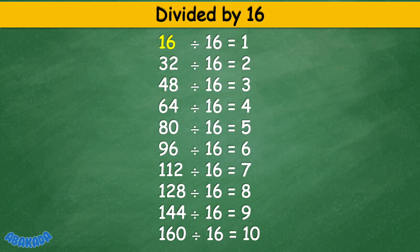Divided by 16. 16 divided by 16 equals 1. 32 divided by 16 equals 2. 48 divided by 16 equals 3. 64 divided by 16 equals 4. 80 divided by 16 equals 5. 96 divided by 16 equals 6. 112 divided by 16 equals 7. 128 divided by 16 equals 8. 144 divided by 16 equals 9. 160 divided by 16 equals 10.